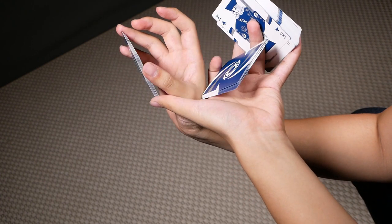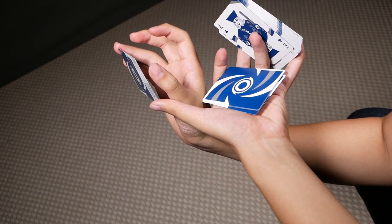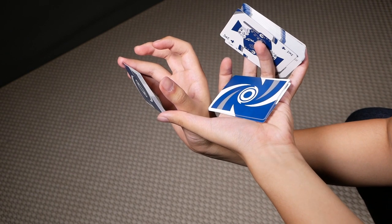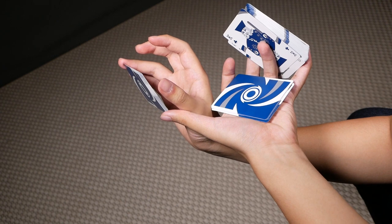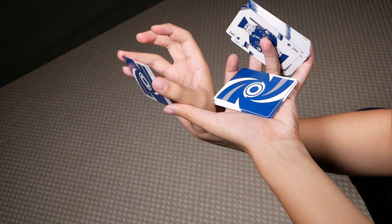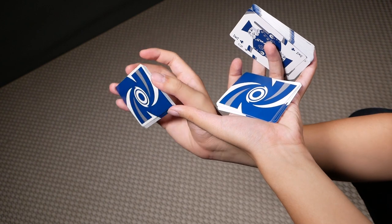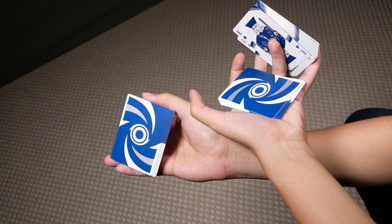Once you're here, you should be able to let go of this packet and it will fall back into the palm of your left hand. Once you're here, you want to have your right thumb contact the short edge down here so that you can just grab this packet and let go of your left thumb.